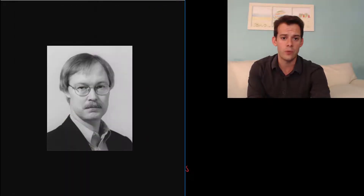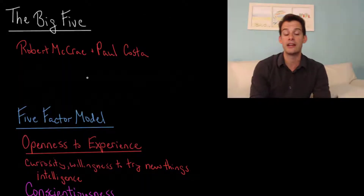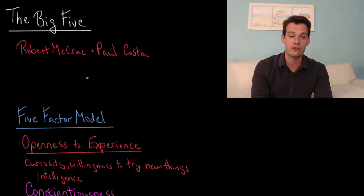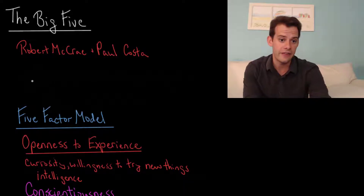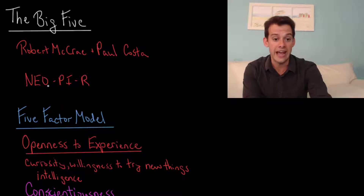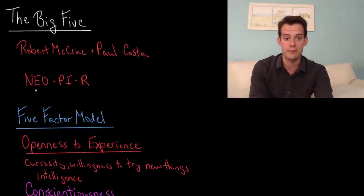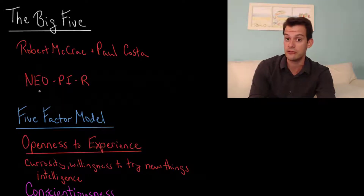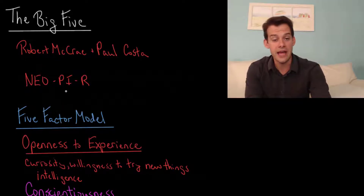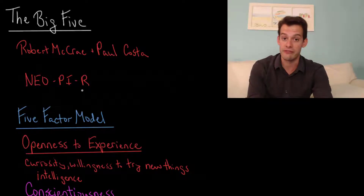What McCrae and Costa did was in 1978 they created a trait assessment that looked at three main traits: neuroticism, extroversion, and openness to experience. Then in 1990 they created an assessment called the NEO PI-R. The NEO initially referred to neuroticism, extroversion, and openness to experience, but it's no longer an acronym because now it's referring to five traits. PI stands for personality inventory and R for revised.